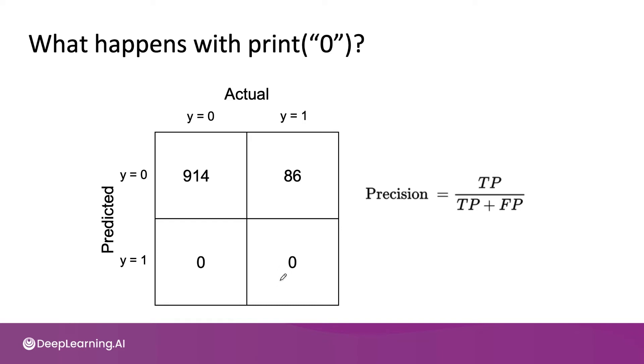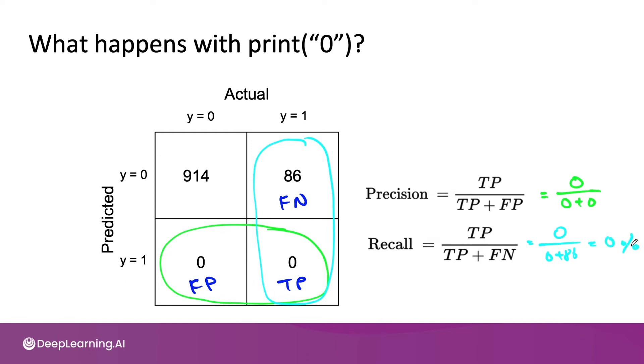So precision is true positives divided by true positives plus false positives, which in this case turns out to be zero over zero plus zero, which is not defined. And unless your algorithm actually output no positive labels at all, you get some number that hopefully isn't zero over zero. But more importantly, if you look at recall, which is true positives over true positives plus false negatives, this turns out to be zero over zero plus 86, which is zero percent. And so the print zero algorithm achieves zero percent recall, which gives you an easy way to flag that this is not detecting any useful positive examples.